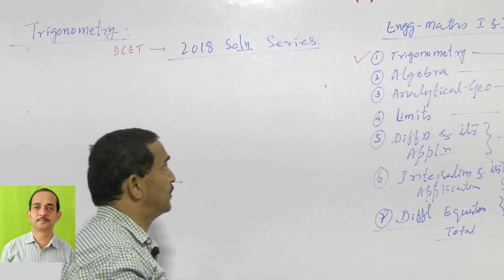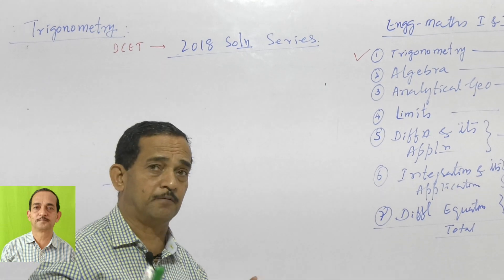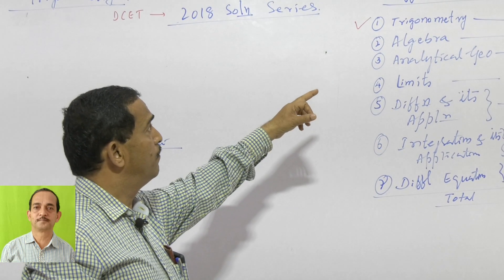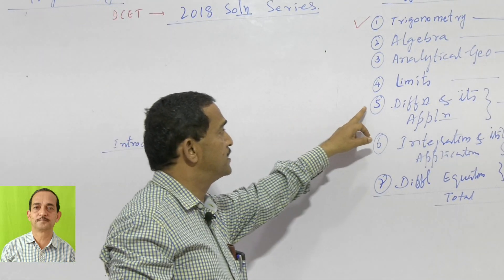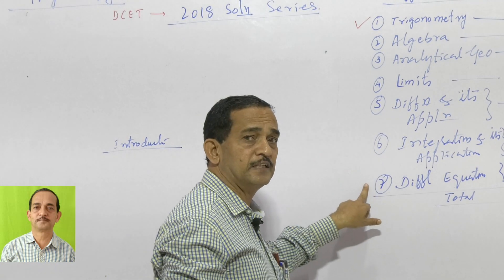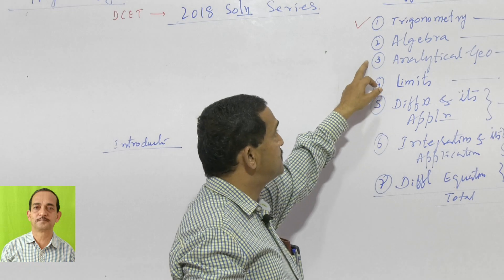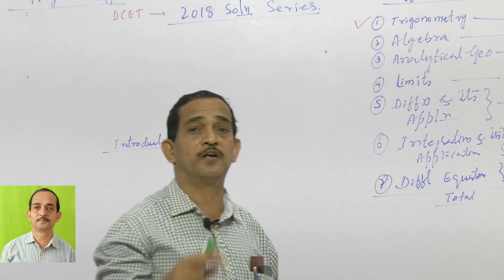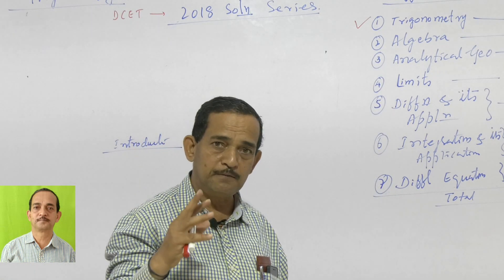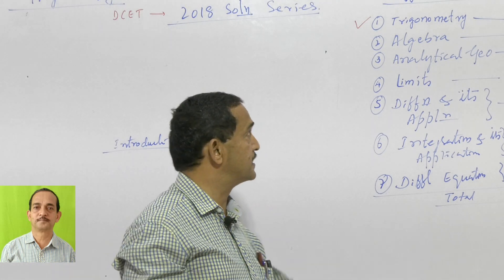It is better to understand why I am covering trigonometry first. Trigonometry is very important to understand differentiation, integration, and differential equations. These all depend on given limits. Sometimes analytical geometry and algebra also require knowing trigonometry. For that purpose, I am starting this trigonometry chapter.